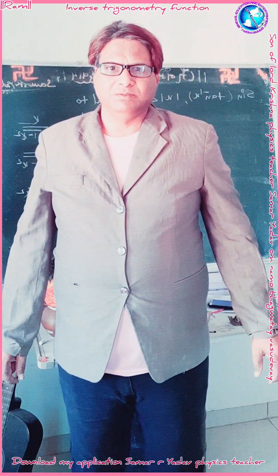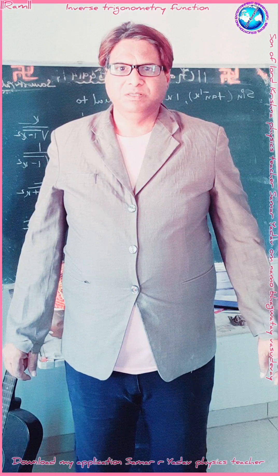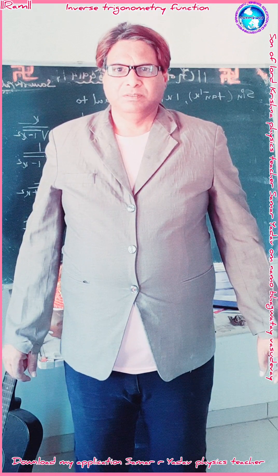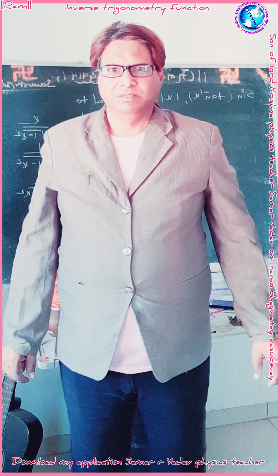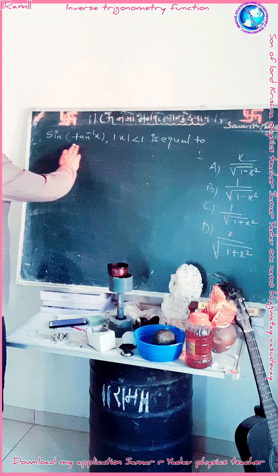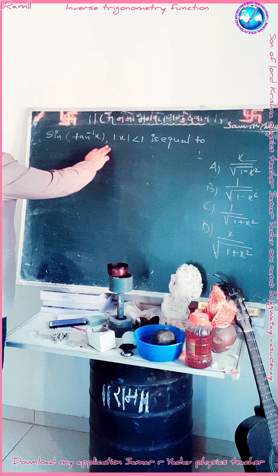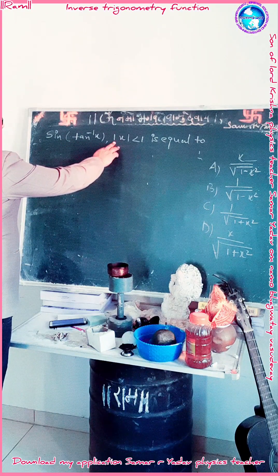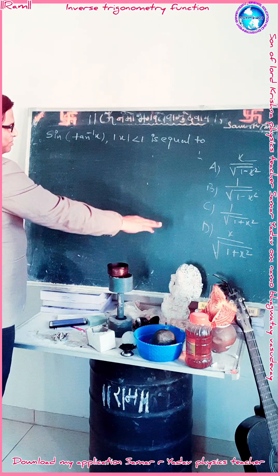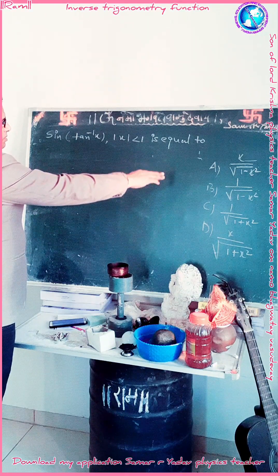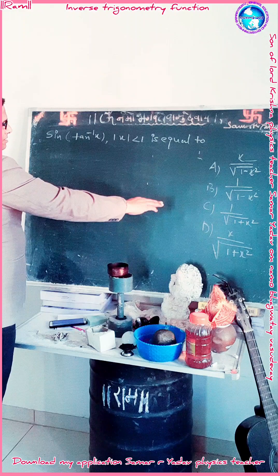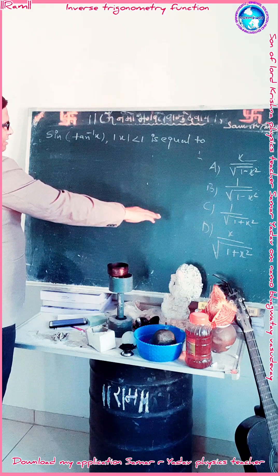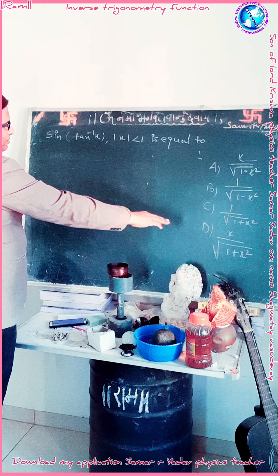Today in Mathematics Numbers C1 MCQ Chapter on Inverse Trigonometric Functions. The MCQ question is: sin(tan⁻¹x), where |x| < 1, is equal to — with four options: A) x / √(1 - x²), B) 1 / √(1 - x²), C) 1 / √(1 + x²), and D) x / √(1 + x²).